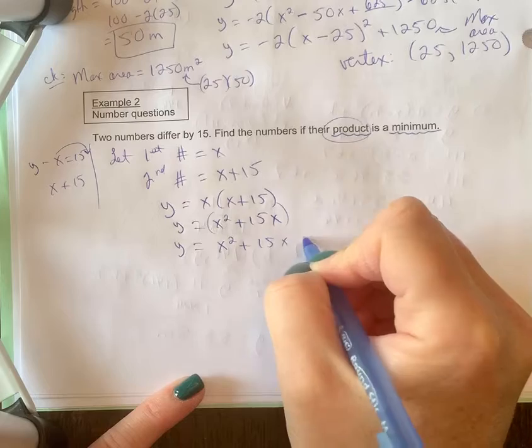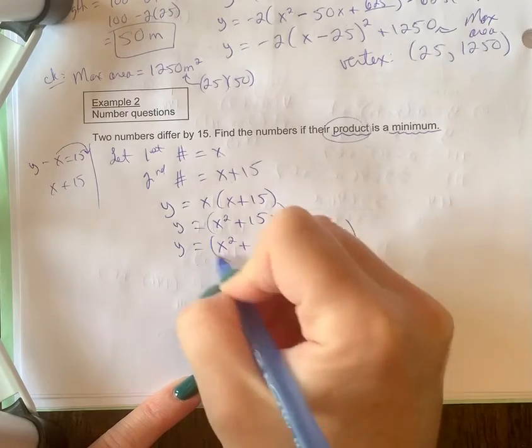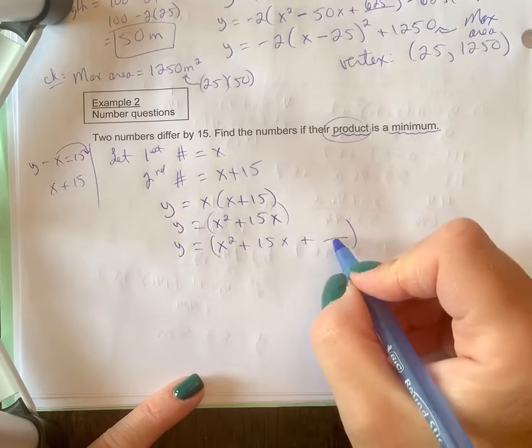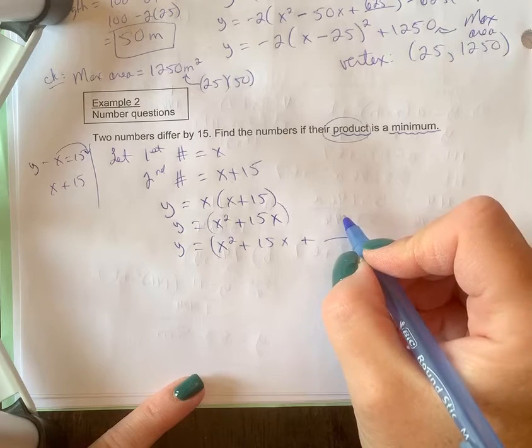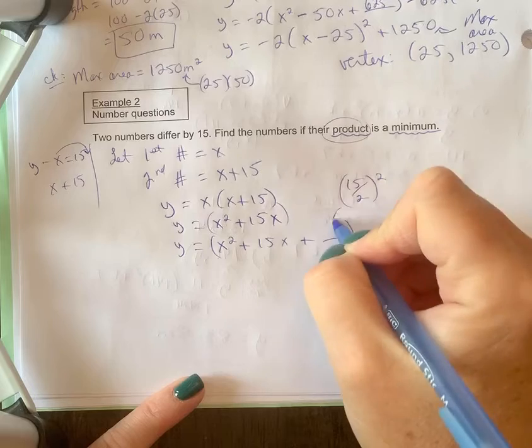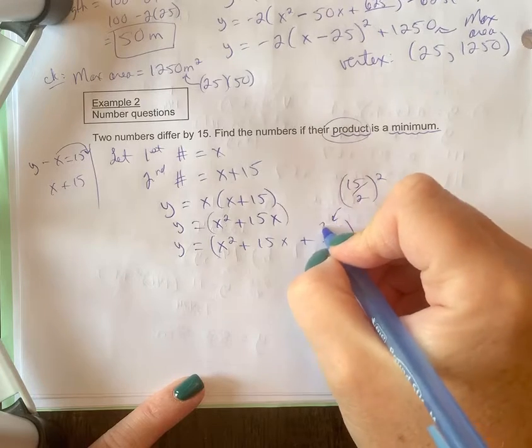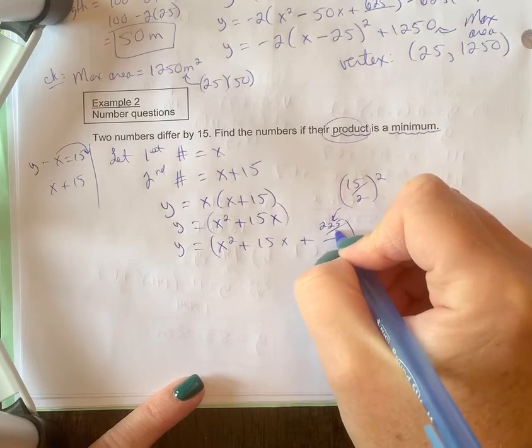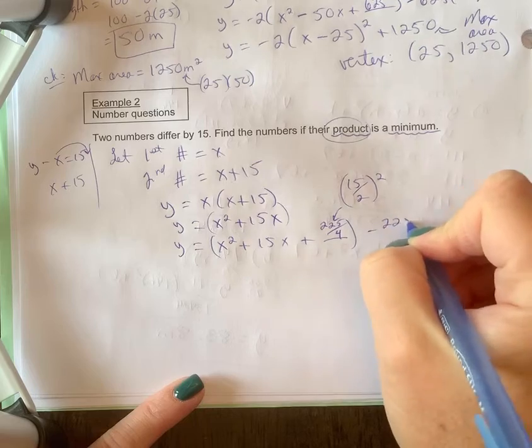We've got that multiplied through, we're going to complete the square now. We're going to group that, there's nothing to factor out. I'm going to put my blank there, so 15 over 2 squared is what goes in the blank.